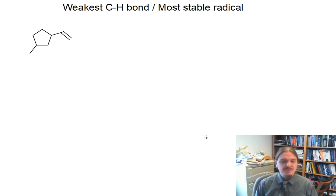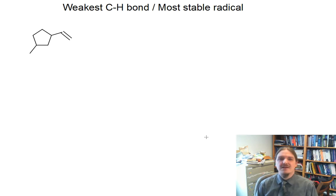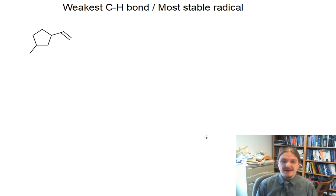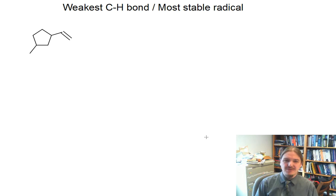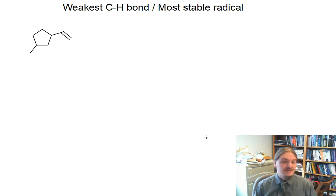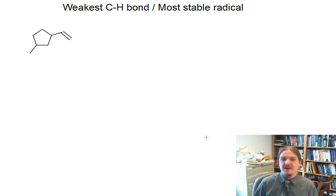In this video, I'm going to use the principles of radical stability and the things that stabilize organic radicals to help identify the weakest carbon-hydrogen bond on a molecule. This is equivalent to asking the question: where on this compound would the most stable carbon radical be?